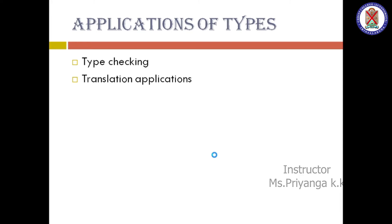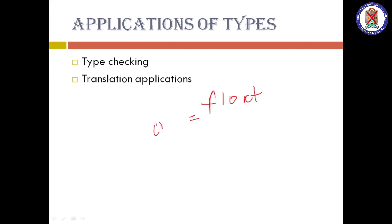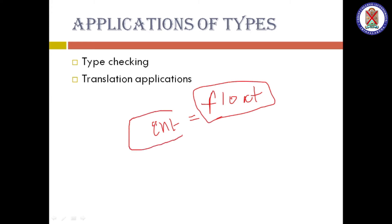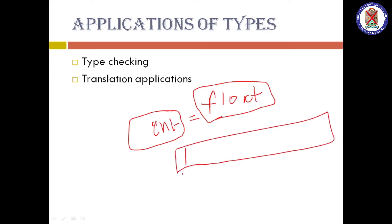Next is the translation application. An explicit conversion is done during the translation application. For example, if I am converting float to int, truncation of data happens because float has a decimal point but int has no decimal point. That is handled by the translation application, and it is also done at runtime. Also, for relative addresses, pointers, and arrays, we only get the first address and the next address is calculated by the compiler with an offset — that is also handled by types.